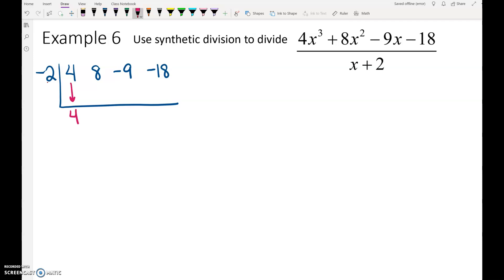Negative 2 times 4 is negative 8. Add. Negative 2 times negative 9 is positive 18. Add. That means that our remainder is 0.